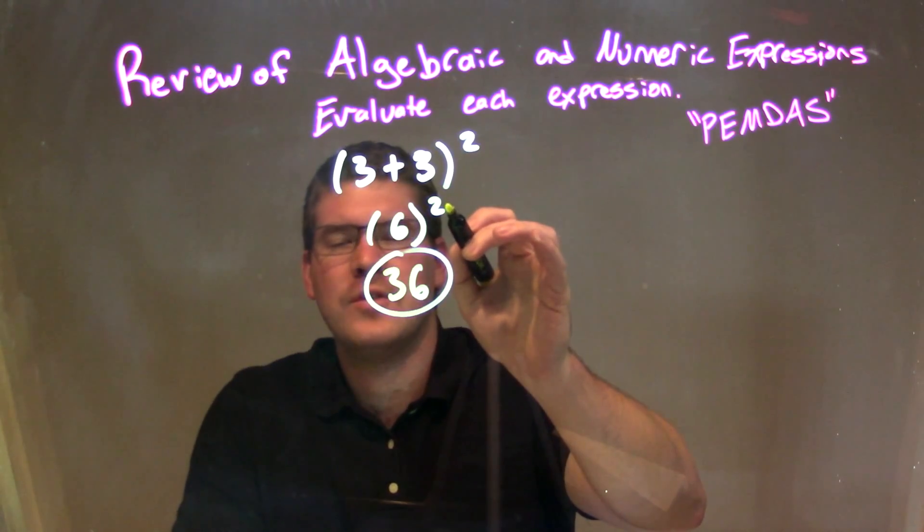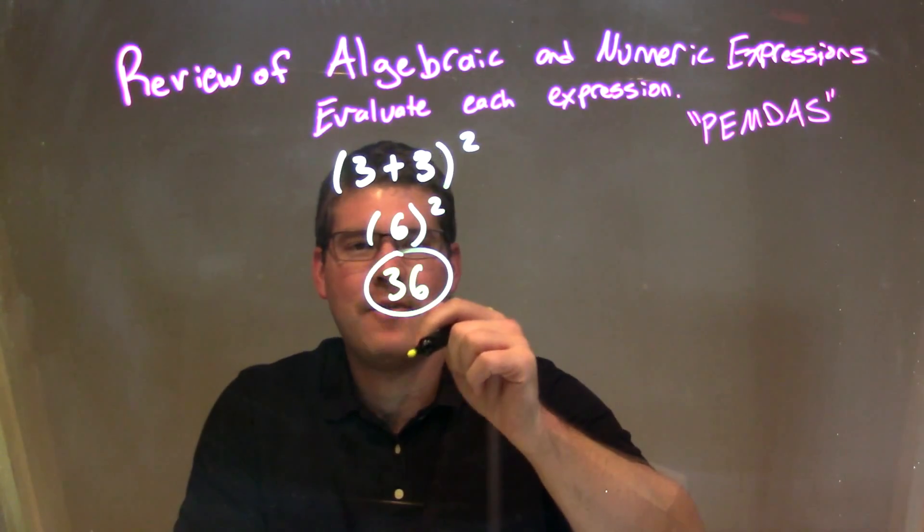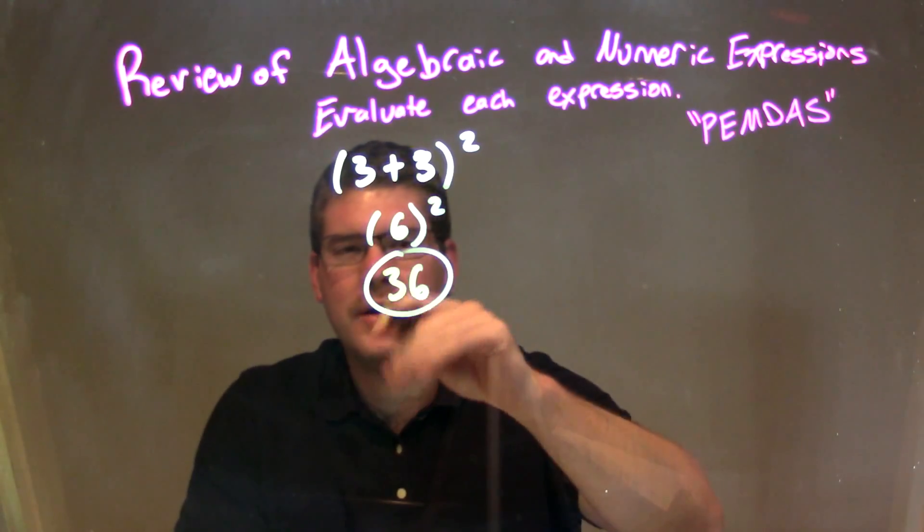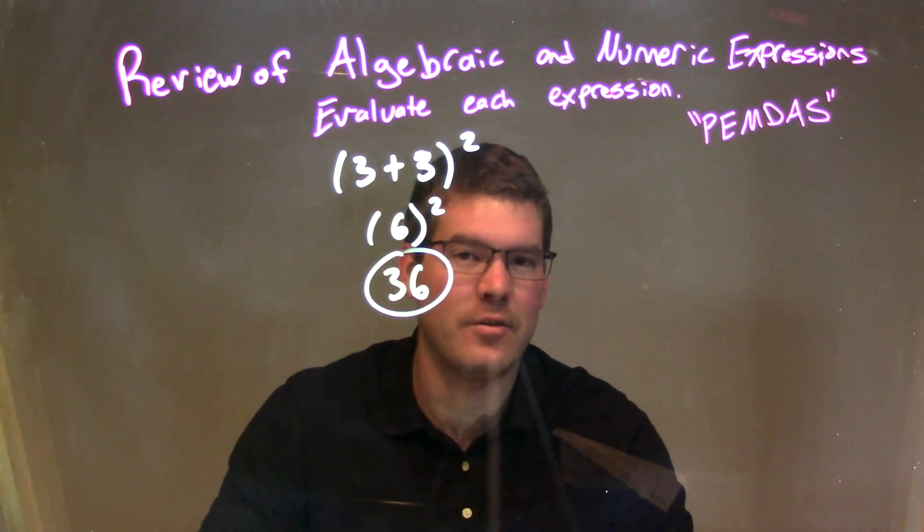Then, we have our exponent. We square that afterwards. You can almost imagine that these parentheses are gone now. 6 squared would be 36, and that is our final answer.